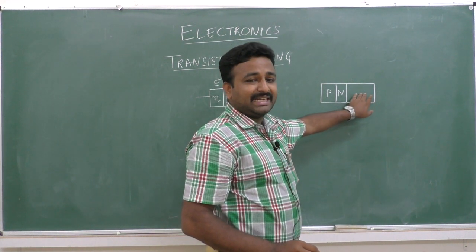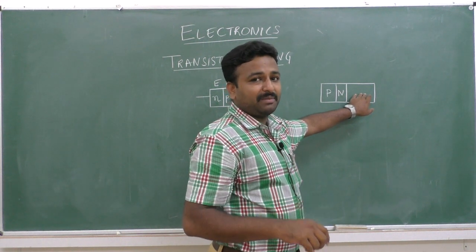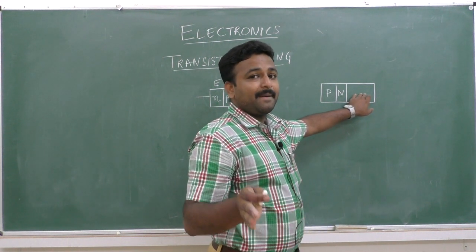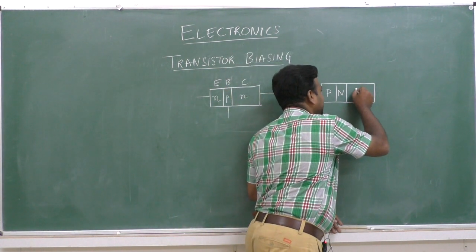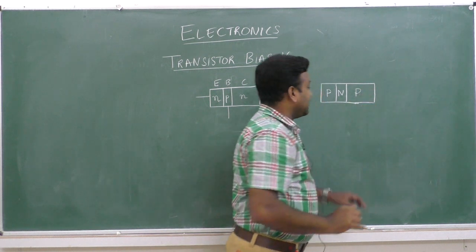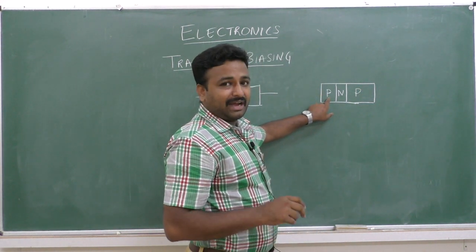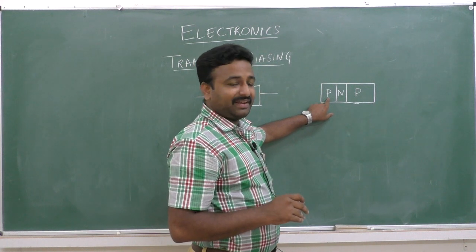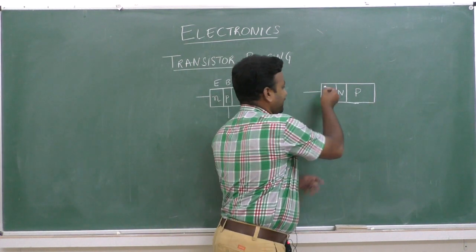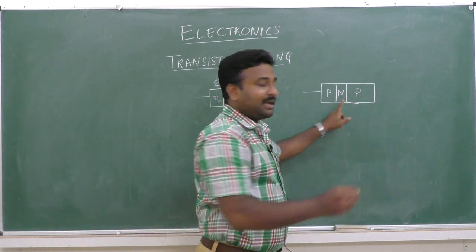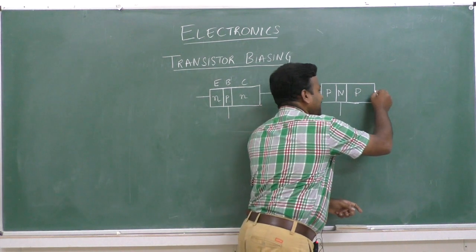The large-sized region is doped with a moderate level of trivalent impurities. Therefore, this becomes once again a P-region. Since the emitter region is doped with high concentration, this becomes the P-emitter. The middle region becomes the P-N base, and the last region becomes the P-collector.